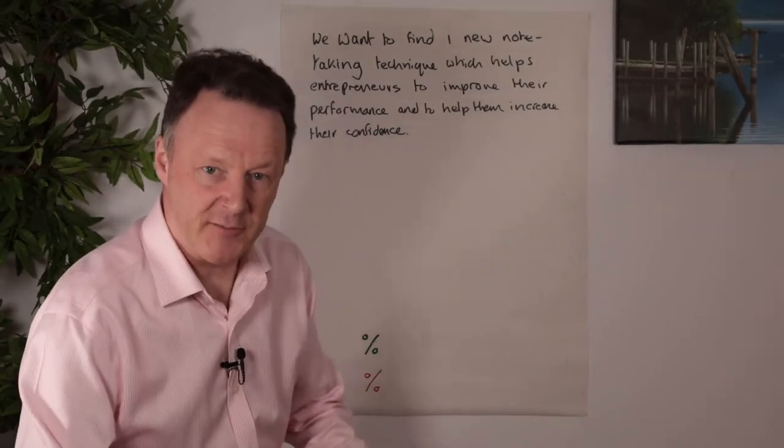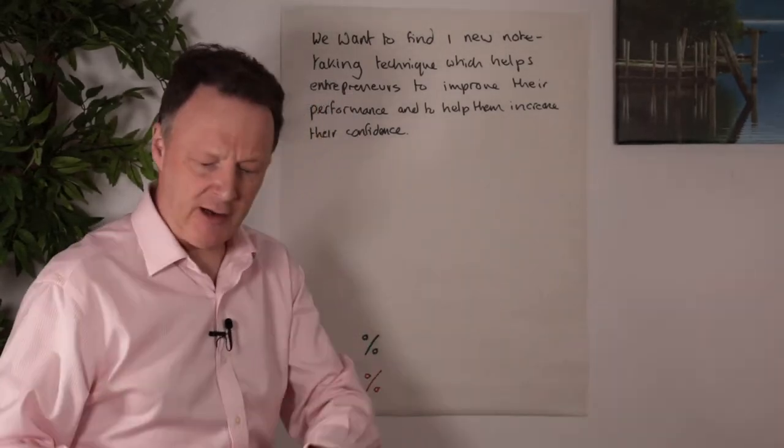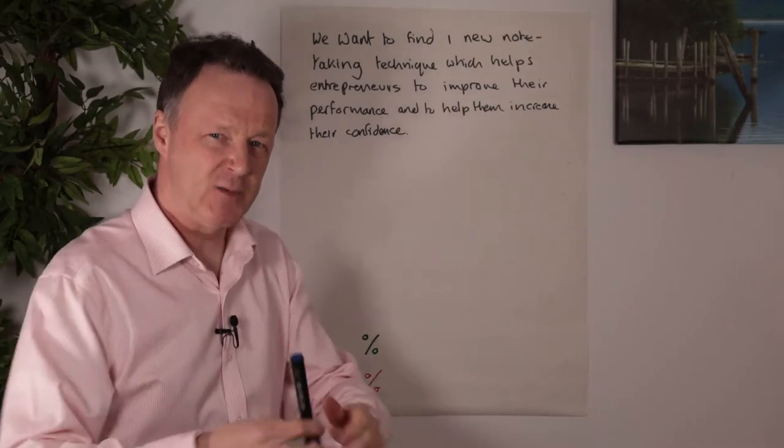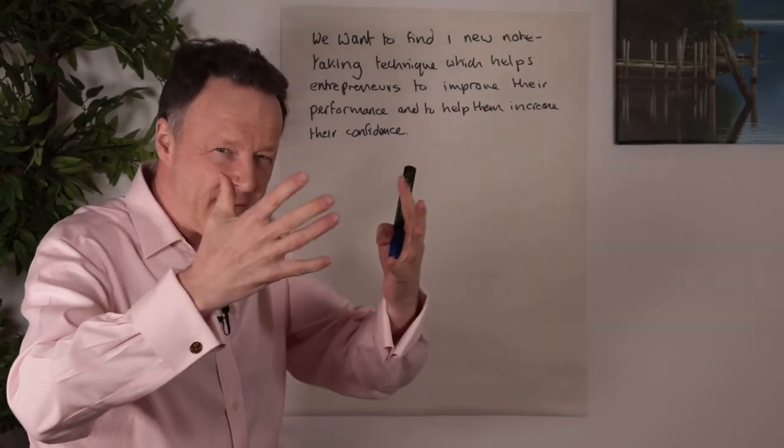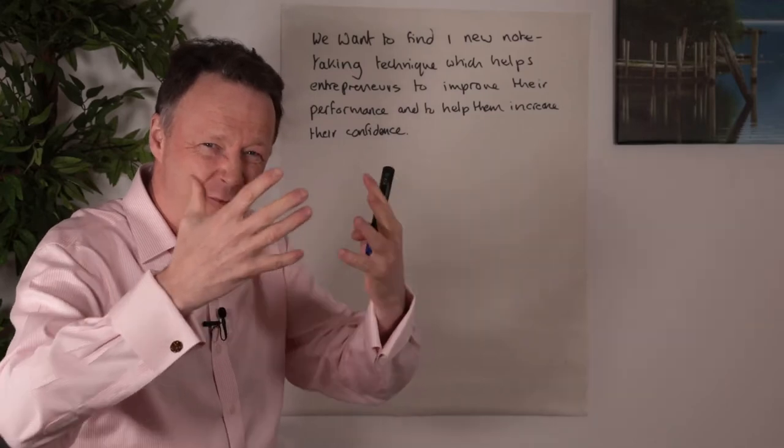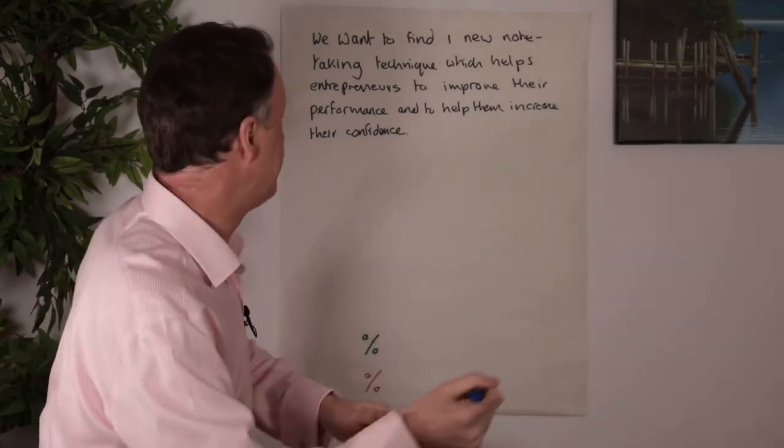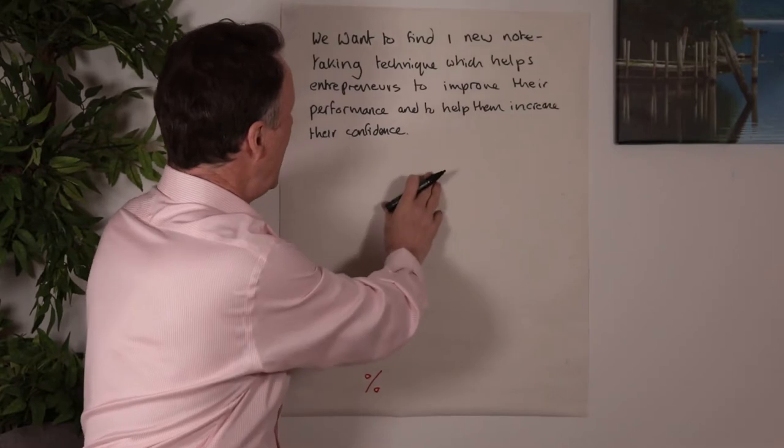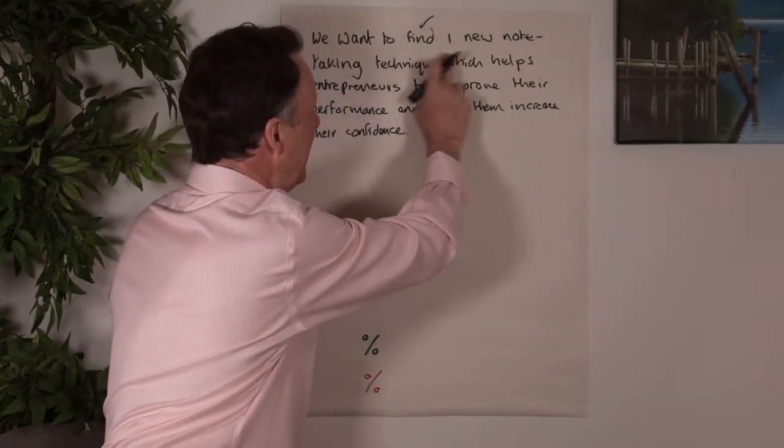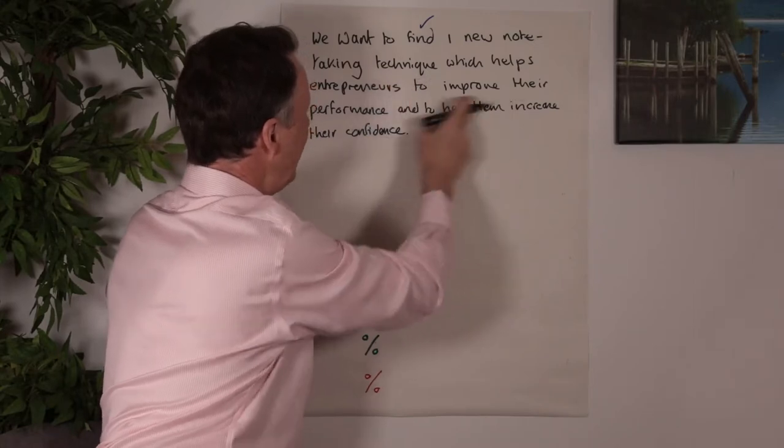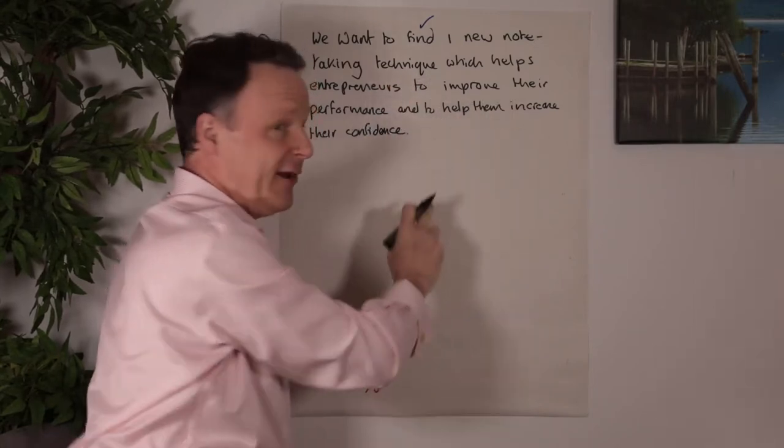So the first part of next generation note-taking, and it includes a mindset as well, is what I call deep filtering. So only taking out the information from what someone's saying that's of real high value. So if I'm looking at this, I would probably take out the word find.